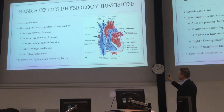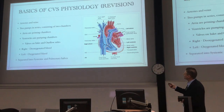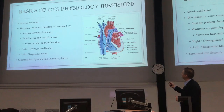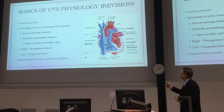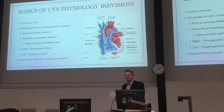Deoxygenated blood coming back to the heart comes through the inlet valve, out the outflow valve of the right heart, to the lungs, then returns oxygenated to the left atrium — the priming chamber of the left heart — goes through the inlet valve, gets pumped around the body through the outflow valve, which stops the blood from rushing back in. If you understand that, you're on your way to understanding cardiovascular physiology.